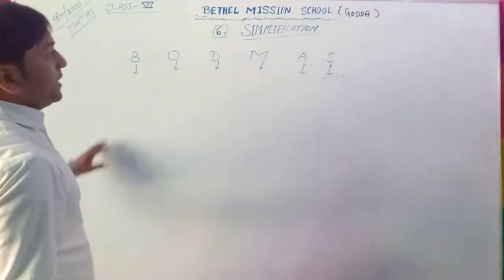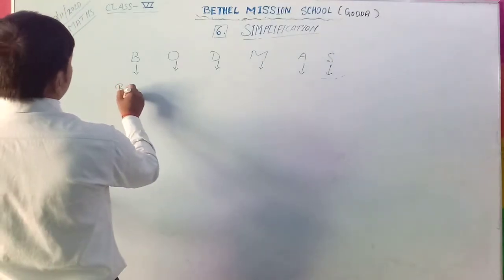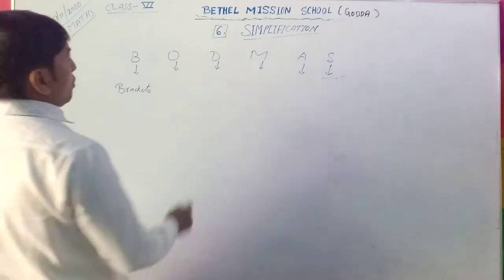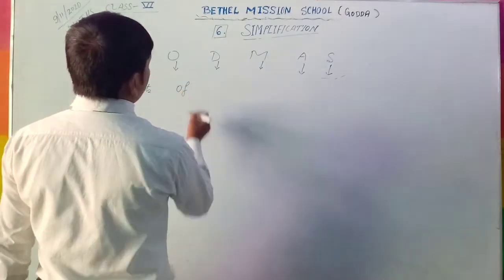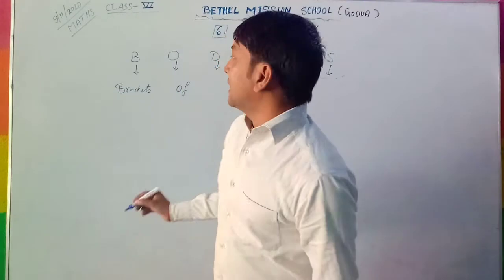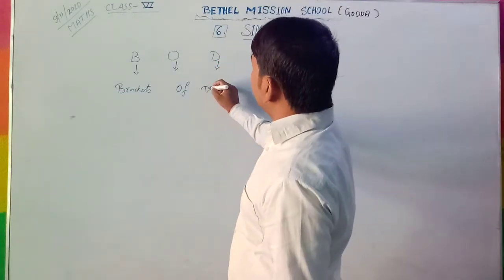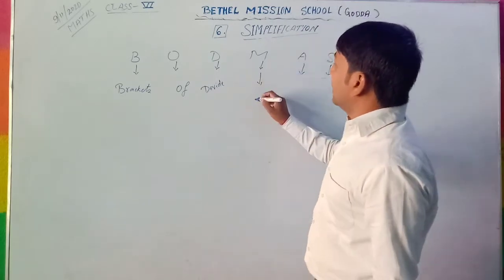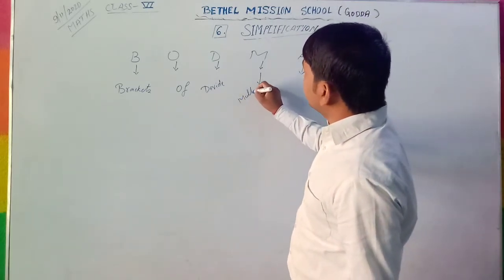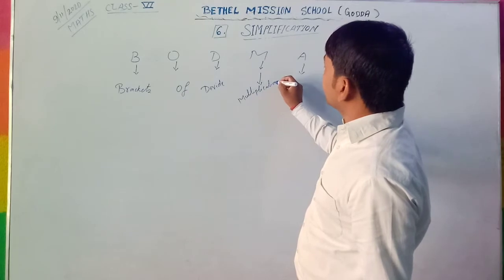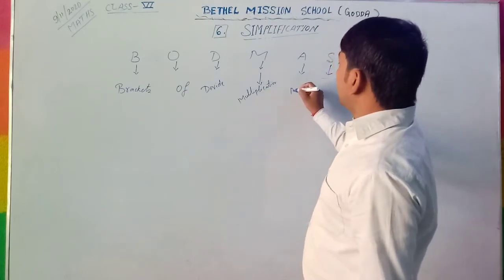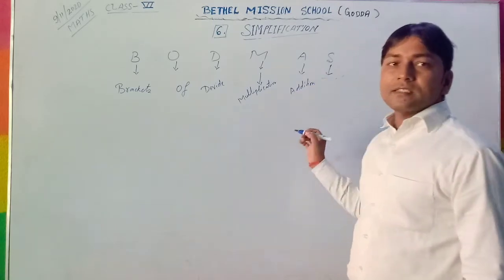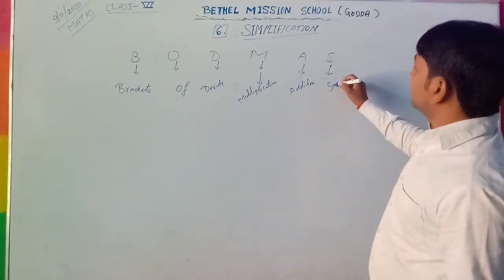B stands for brackets. O stands for off. D stands for division. M stands for multiplication. A stands for addition. And S stands for subtraction.